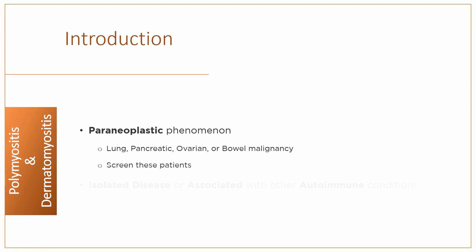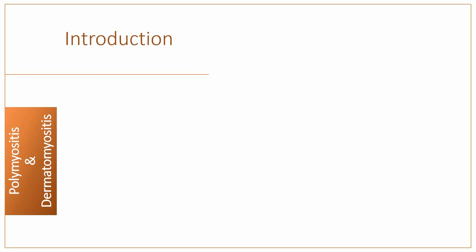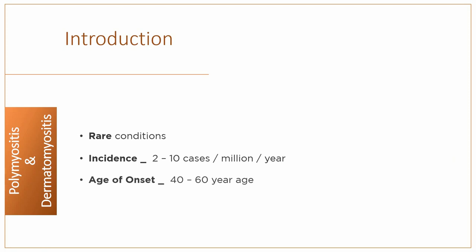Furthermore, both these conditions can occur in isolation or may be in association with other autoimmune conditions like SLE and scleroderma. This is a very rare disease; incidence is 2–10 cases per million per year. Age of onset is usually 40–60 years of age.